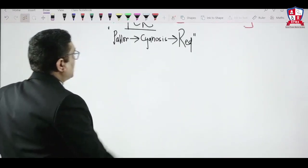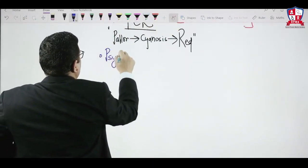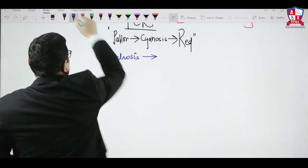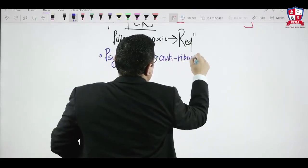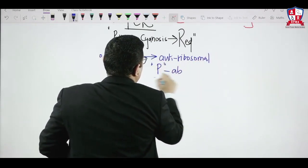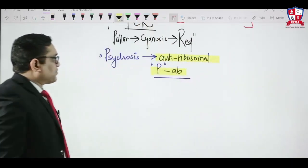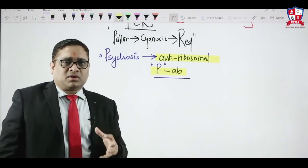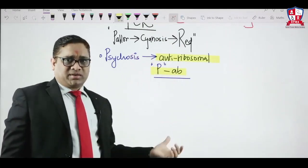A NIMHANS 2015 question: if an SLE patient is having psychosis, which antibody will be elevated? The answer is anti-ribosomal P antibody. Anti-ribosomal P antibodies are increased in SLE with psychosis.